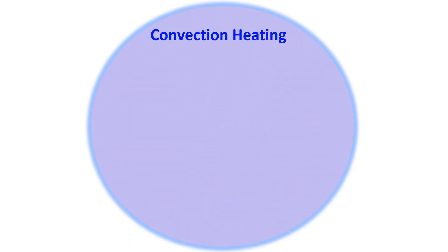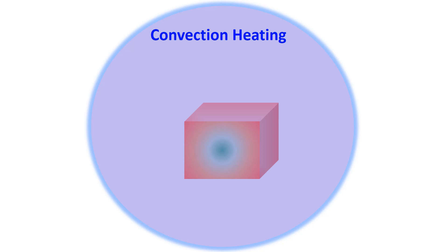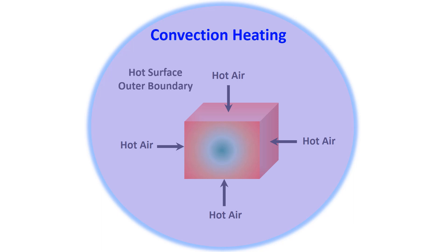We can also consider convection heating. We can place food in hot air. In this case, heat is transferred from the surface to the interior of the cube.